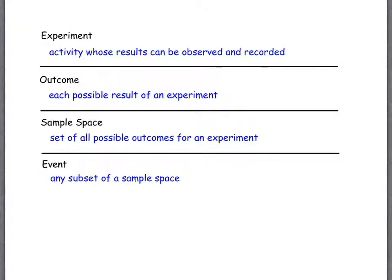An outcome is just the result of an experiment, anything that could happen. Anything that could occur. The sample space is the collection of all of the things that could occur, all of the different outcomes. And then an event is any subset of the sample space.